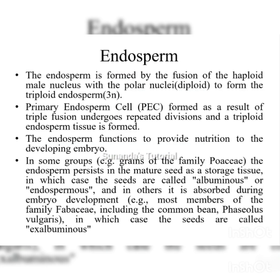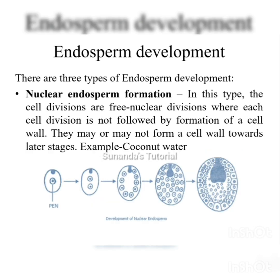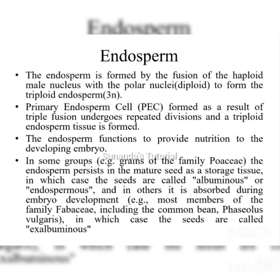Endosperm is formed by the fusion of a haploid male gamete with the polar nuclei, which is present at the center of the embryo sac and which is diploid in nature. When the haploid male gamete fuses with the diploid polar nuclei, they form a triploid primary endosperm nucleus, which undergoes repeated mitotic divisions to form the mature endosperm.